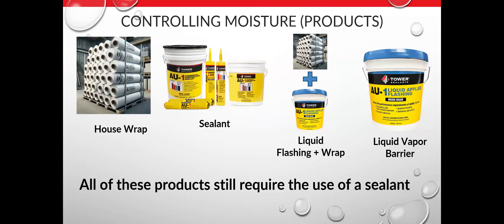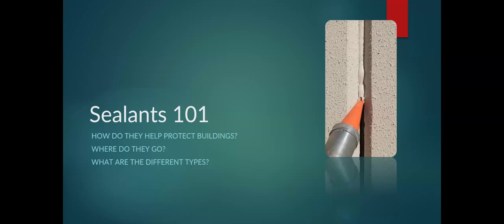All these products — house wrap, sealants, liquid applied flashing with cladding, and liquid vapor barrier — still require the use of a sealant in a rough opening or perimeter. That brings us to Sealants 101: what they are, where they go, and the different technology choices available.